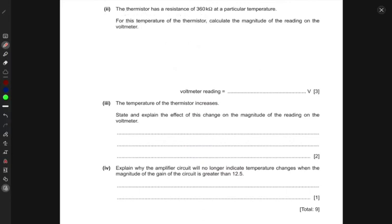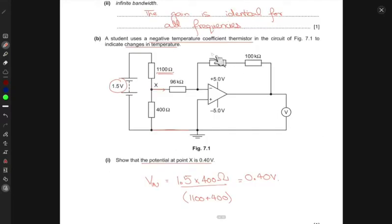The thermistor has a resistance of 360 kilohms at a particular temperature. For this temperature, calculate the magnitude of the reading on the voltmeter. This 360 kilohms is connected in series with this one, so these two will be added.